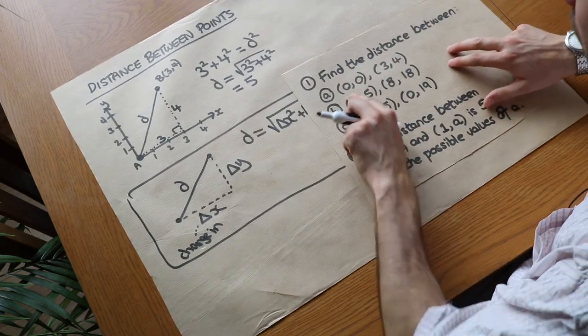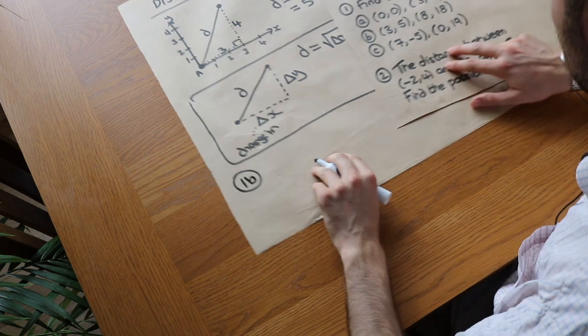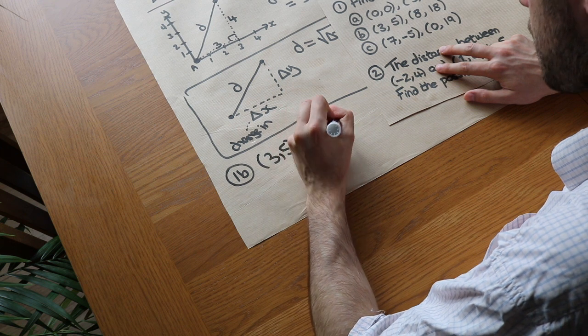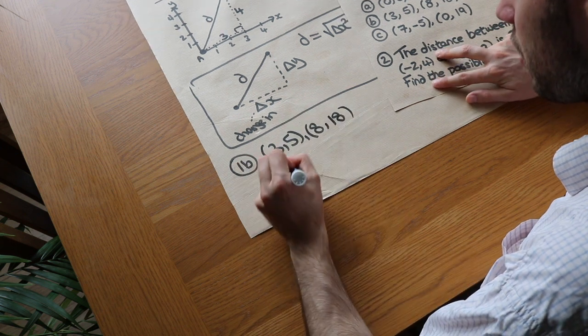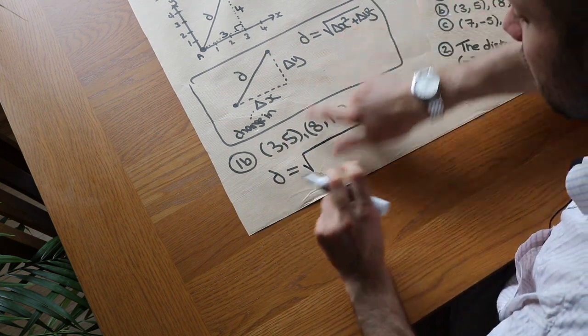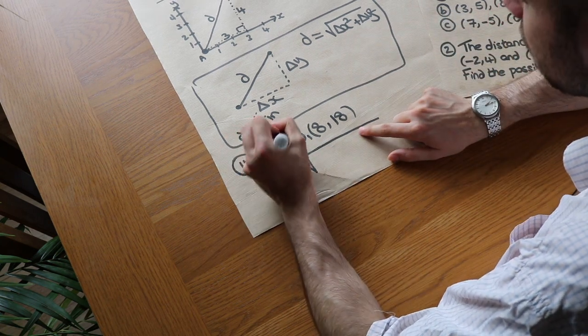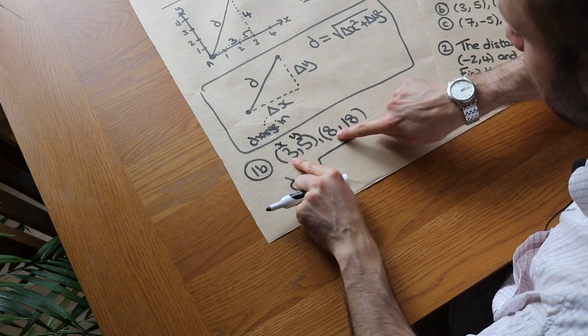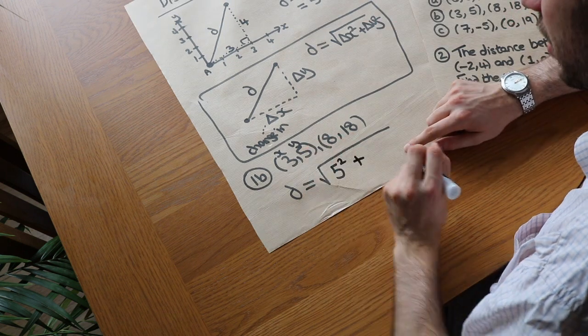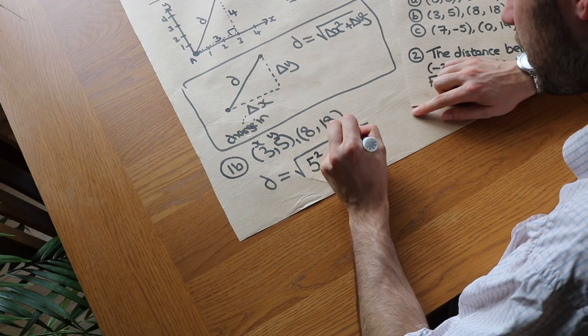Right, so let's do some more examples. We've already done 1a. We've got 1b. So we have 3, 5, and we've got 8, 18. What is the distance between those? Well, it's going to be the square root of, now you can mostly do these in your head, the changes. So what's the change in x? So remember, this is the x value, this is the y value, students so often get this wrong. The change in x from 3 to 8, that's a change of 5. So we do 5 squared plus what's the change in y? Well, 5 to 18, that's the difference of 13, so the change is 13 squared.